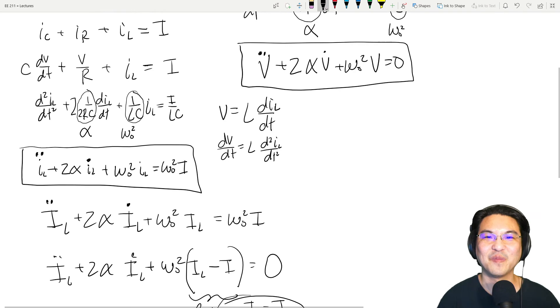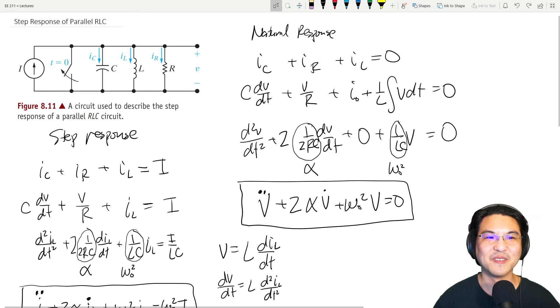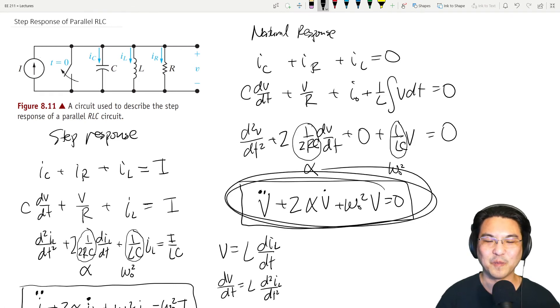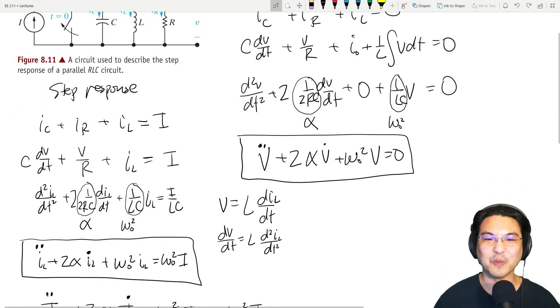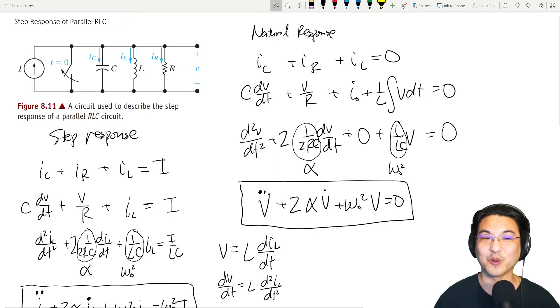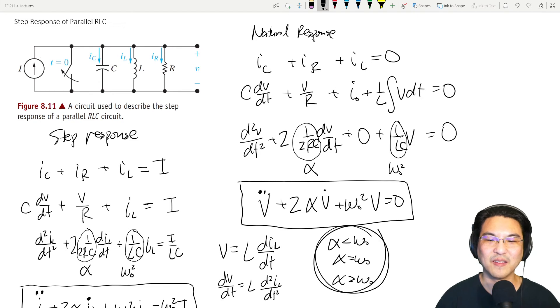So everything you learned previously in the previous videos, when we did the natural response of the parallel RLC, remember you have the characteristic equation, and then it will be underdamped, overdamped, or critically damped, depending on whether or not alpha is less than omega_0, alpha is equal to omega_0, or alpha is greater than omega_0. And then there are different solutions for each of those scenarios.